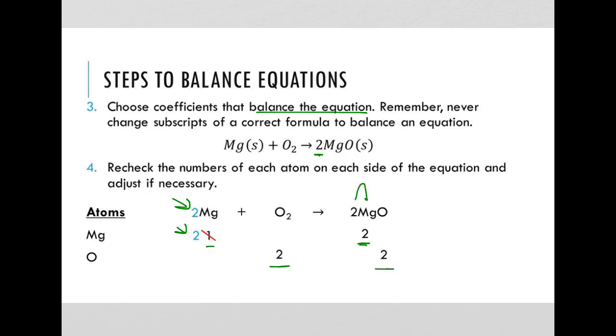Now, remember, that's because this coefficient basically multiplies what I have in the actual equation. So I have 2 magnesiums and 2 oxygens.